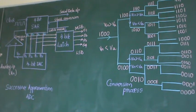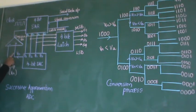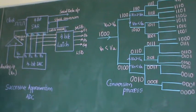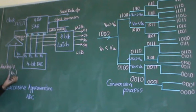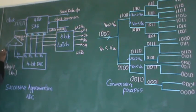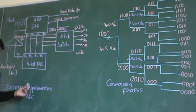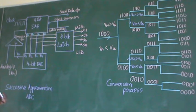Now I will tell you how the inputs and outputs are transferred between blocks. To the comparator, we give the analog input voltage, which is represented by VIN. One input, VIN, is provided to the negative terminal of the comparator. The other input to the comparator comes from the 4-bit DAC, and that is represented as VA — the analog voltage output of the DAC.